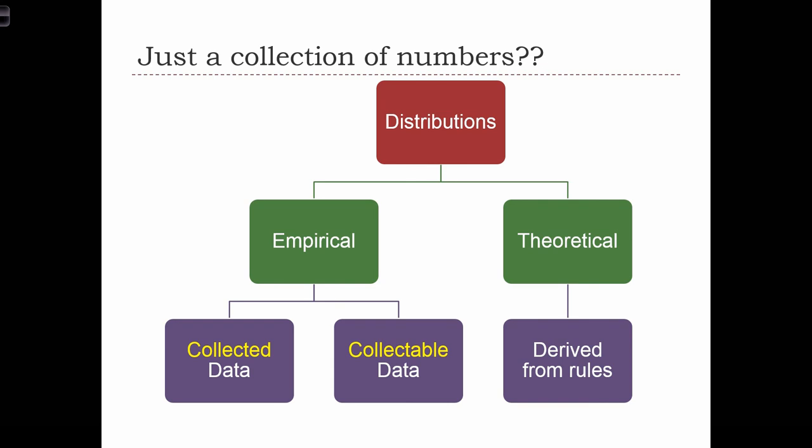or we've talked about theoretical probability distributions. A distribution that's defined by mathematical rules that allows us to predict the probability associated with events occurring. And the distribution of probabilities we've called the probability distribution function.